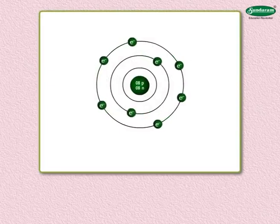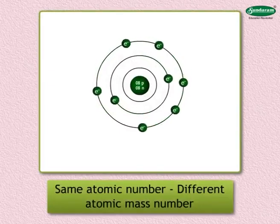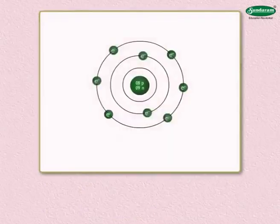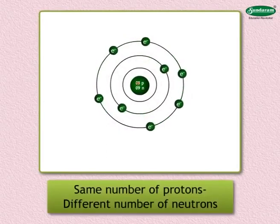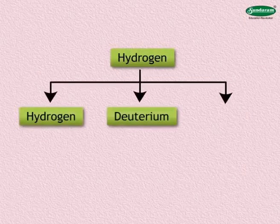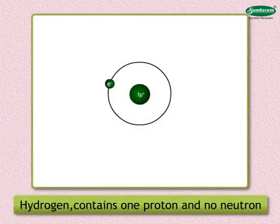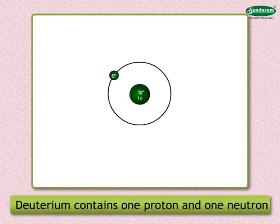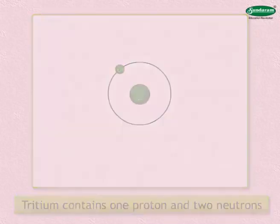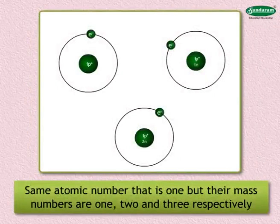Now we shall discuss isotopes. In nature, certain elements have atoms with the same atomic number but a different atomic mass number — such atoms are called isotopes of that element. The nuclei of different isotopes have the same number of protons but a different number of neutrons. For example, hydrogen has three isotopes: hydrogen, deuterium, and tritium. Hydrogen contains one proton and no neutron; deuterium's nucleus has one proton and one neutron; tritium's nucleus has one proton and two neutrons. They have the same atomic number (Z = 1) but mass numbers of 1, 2, and 3 respectively.